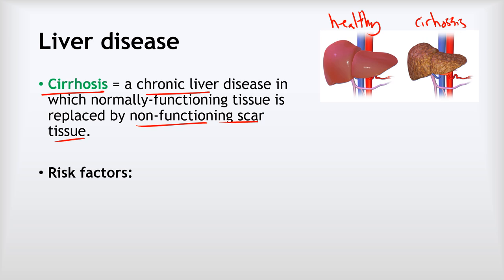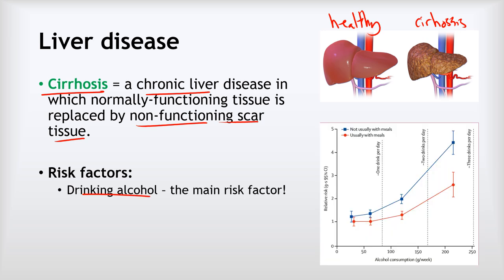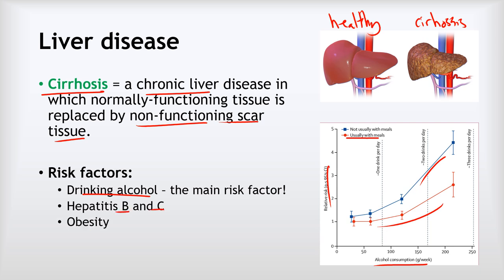The main risk factor for liver disease is drinking alcohol. This graph shows the risk of liver disease versus the amount of alcohol consumed each week, and there is a very clear positive relationship — the more you're drinking, the more likely you are to develop liver disease. The red line represents people drinking with meals versus the blue line for drinking without meals, and the risk is higher if you're drinking on its own. Other risk factors include hepatitis B and C, which increase your risk of cirrhosis, and obesity also increases your risk of liver disease.